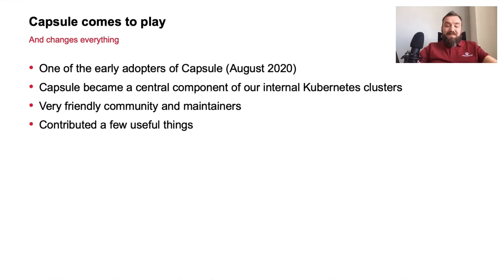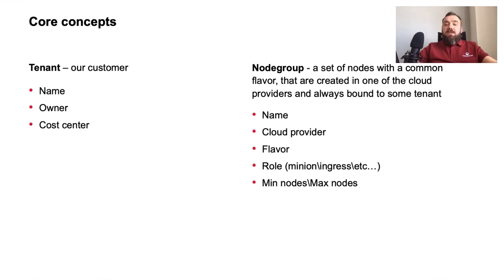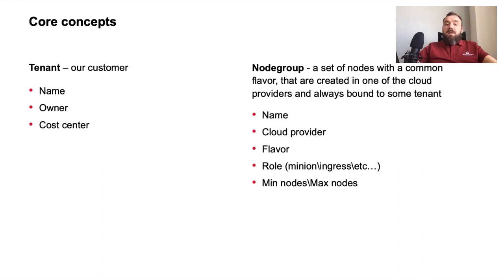With the help of Capsule we were able to formalize two core concepts now used in our internal Kubernetes clusters. The first is Tenant — it's our customer. It has a name, a group of owners with admin privileges in the tenant, and a cost center label applied to the tenant's nodes and used for billing. The second is Node Group — a set of nodes with a common flavor created in one of the cloud providers, always bound to a specific tenant. Think of it as a cloud-agnostic abstraction of AWS auto scaling groups or Google Cloud node groups. A Node Group has a name applied as a label to all nodes so customers can use it in label selectors.